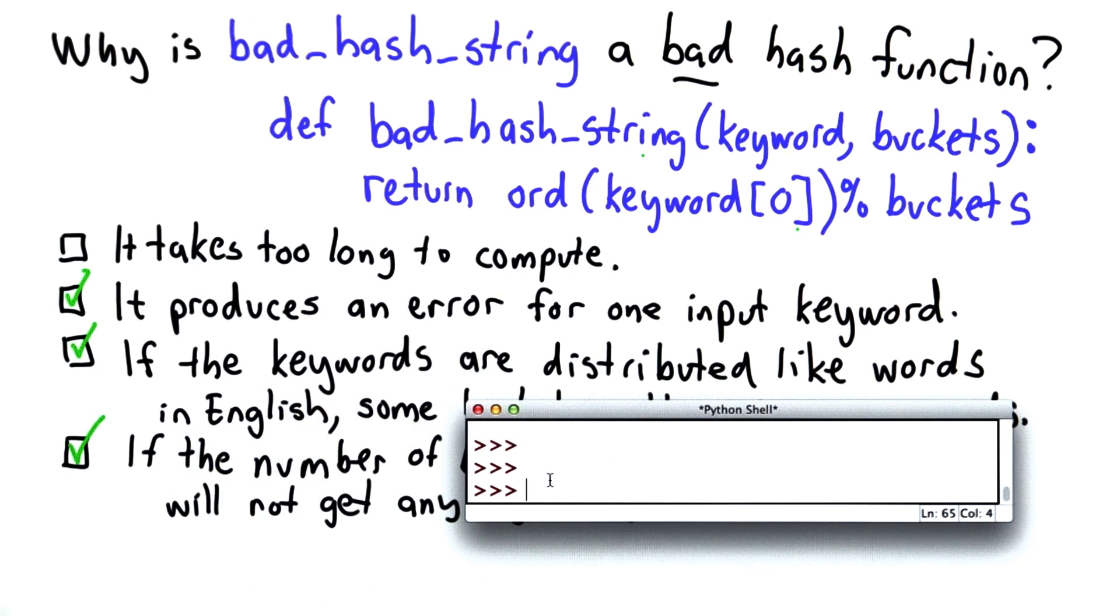So let's see what happens when we try that in the Python shell. So we'll try to evaluate bad_hash_string, passing in the keyword the empty string, which is a perfectly valid string, and let's say there are 100 buckets. And we do get an error.